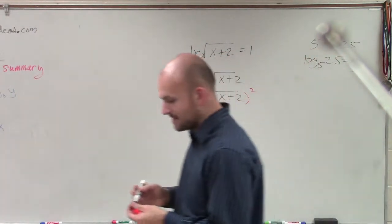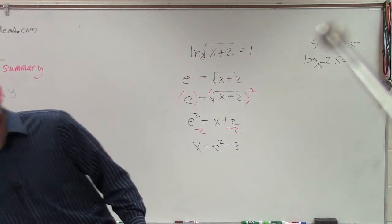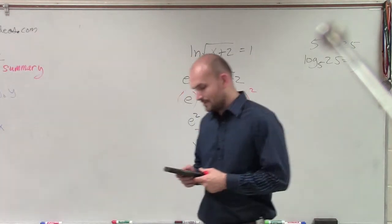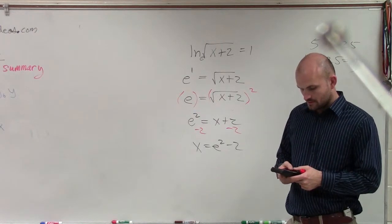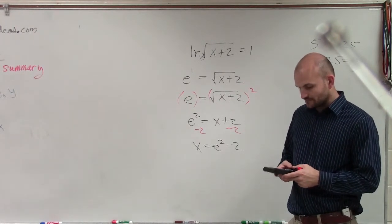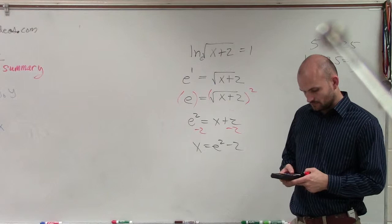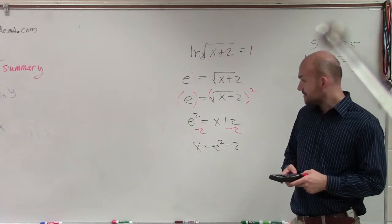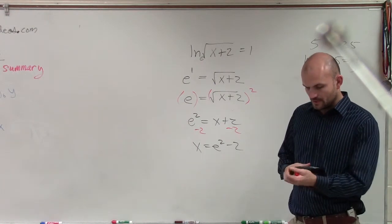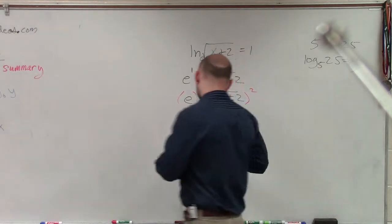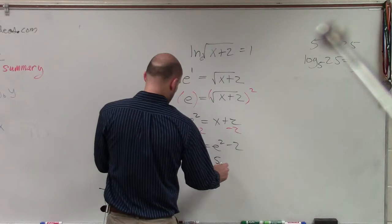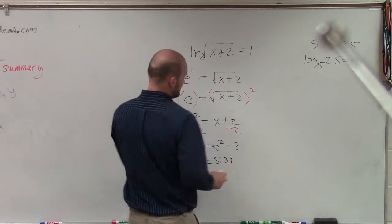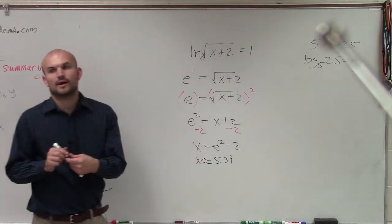what I'm going to do is I'm going to take my handy dandy mathematical calculator. And I'll just go ahead and take e, square it, and then minus 2. So therefore, I have x is approximately 5.39. OK?